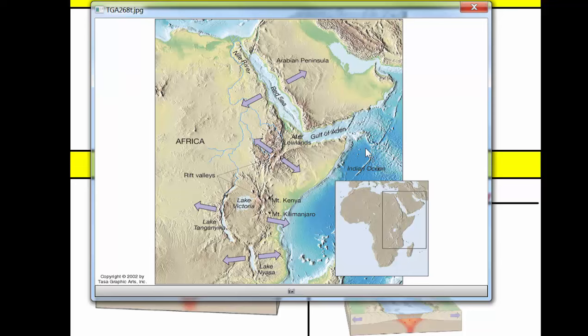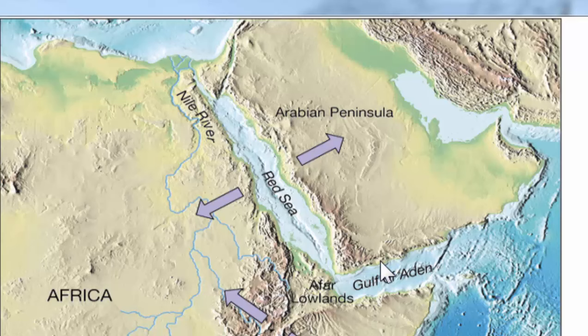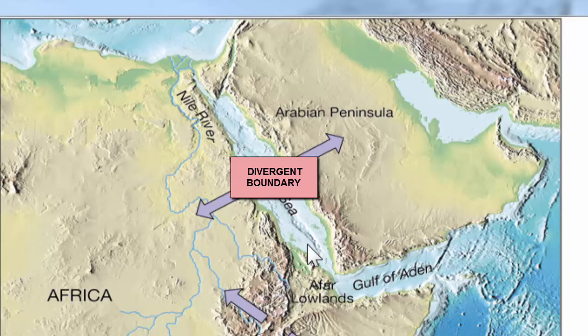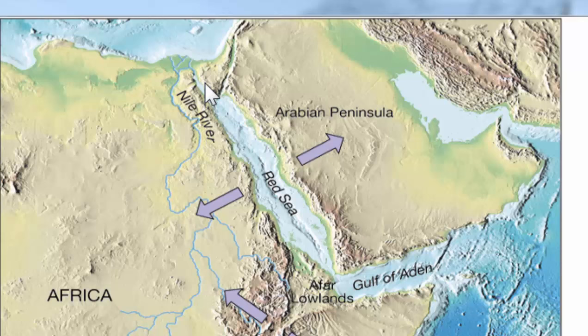Here we have a picture of the eastern, northeastern coast of Africa. This area is known as the Great Rift Valley. If you've ever looked at a map of Africa, you'll notice that the Middle Eastern or Arabian Peninsula kind of looks like it fits into the northeastern part of Africa. That's because it was once a part of Africa. A divergent boundary down the middle of the Red Sea started to create seafloor spreading, creating a rift. Because this land was once together, it rifted apart and eventually filled in with water, creating the Red Sea.